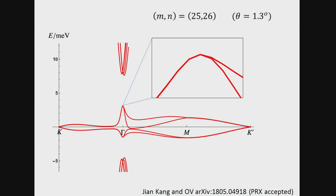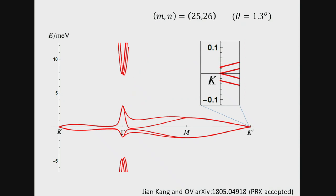Zooming in at the gamma point — the center of the Moiré Brillouin zone — the two top energy states are degenerate and form a doublet, transforming as an E representation of the D3 group. The same is true at the bottom of the band structure. At the corners of the Brillouin zone, the Moiré K and K' points, we see one doublet and a split pair of bands transforming as one-dimensional representations A2 and A1.